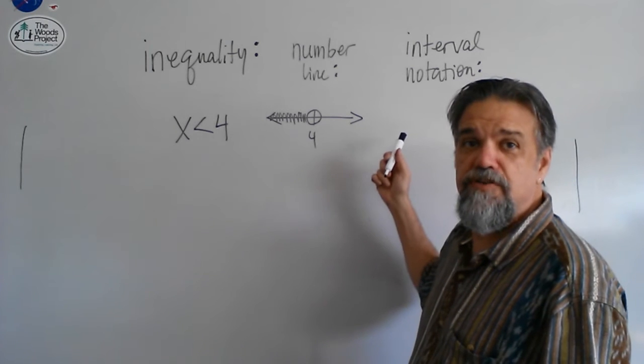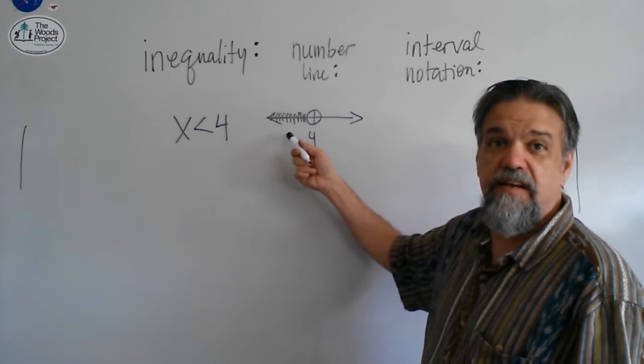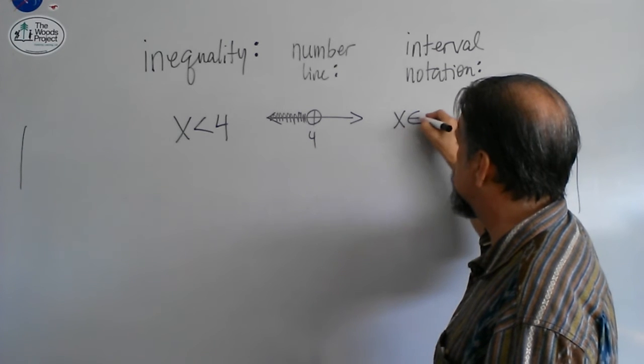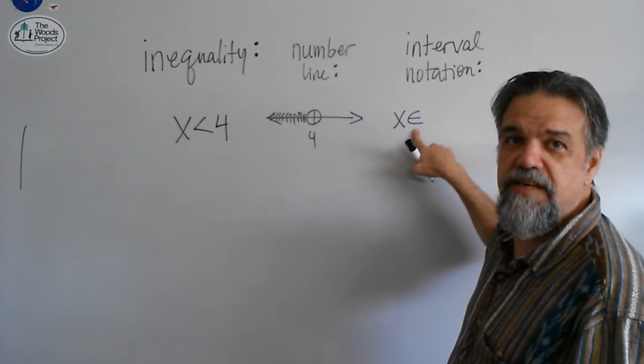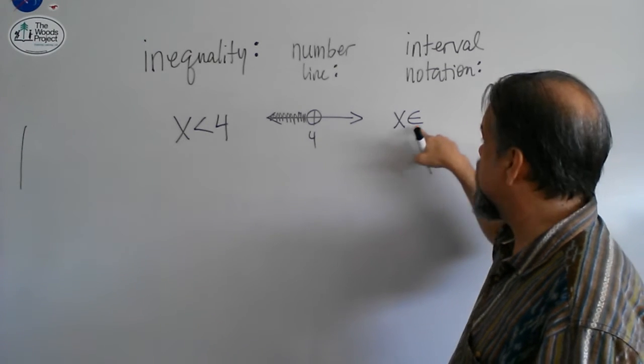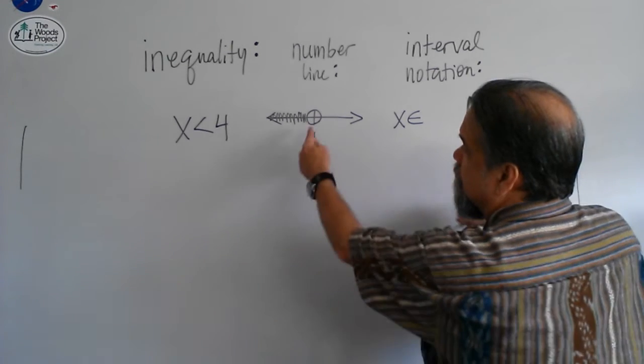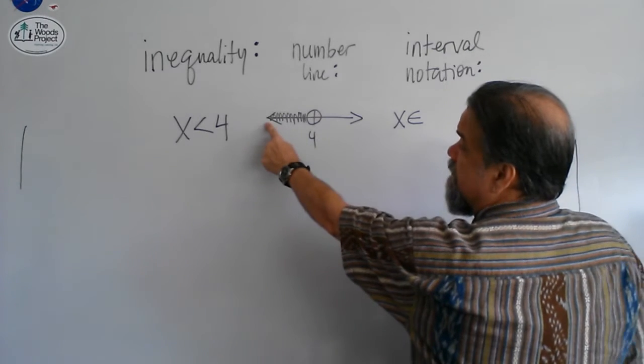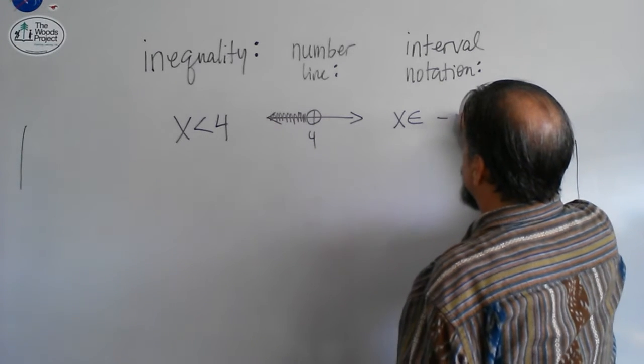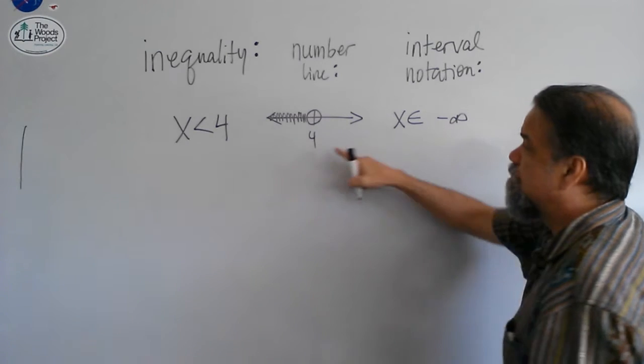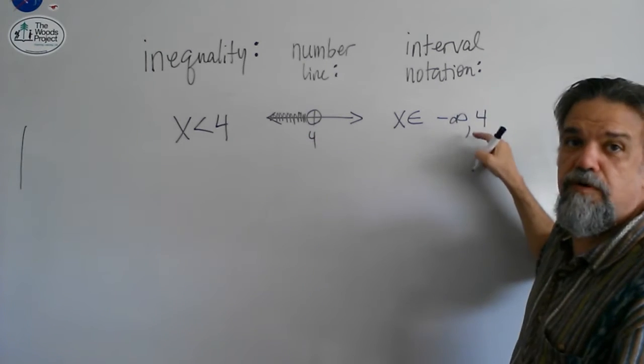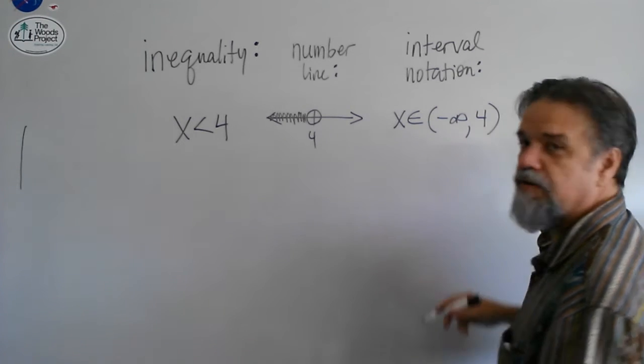In interval notation, it looks kind of like the number line. What you do is you say x, and you do a little symbol like this, that means it's in this interval. So x is in this interval, it's going to be the interval that goes from, now, what's the furthest left of our number line? Negative infinity. So from negative infinity to 4, I'll say negative infinity to 4, and I'll put some parentheses around there.